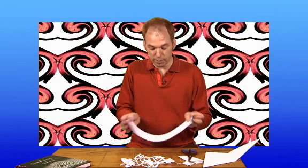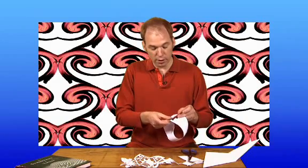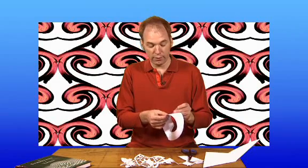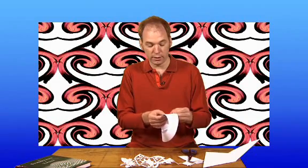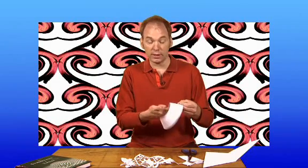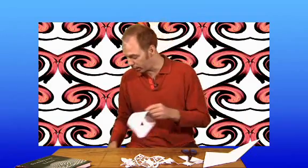A Mobius band is a remarkable way of having a sheet of paper with just one side. I take a strip and attach it, but I attach it with a half twist, and many of you realize that this will end up just having a single side on the paper.